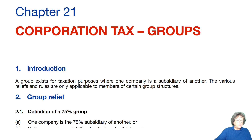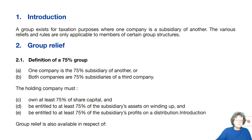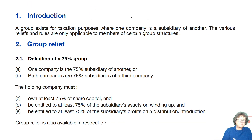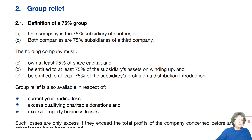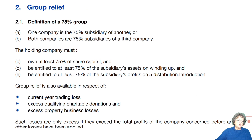So as with all things tax, what do we start with? We start with a rule. A group exists for tax purposes where one company is a subsidiary of another, and there are various rules and reliefs for being a member of a group. So the definition of a 75% group: one company must be the 75% subsidiary of another, and both are 75% subsidiaries of a third.